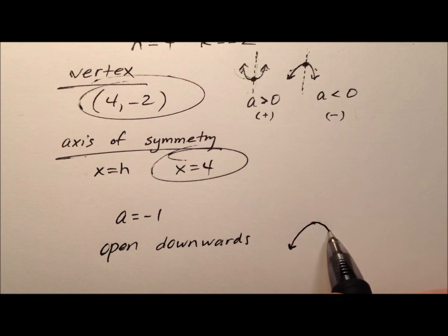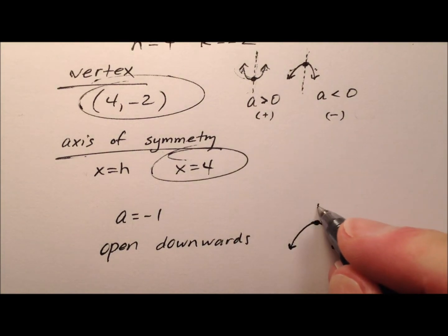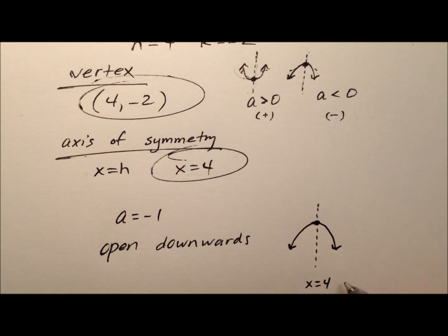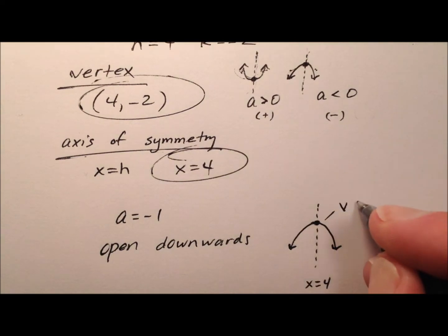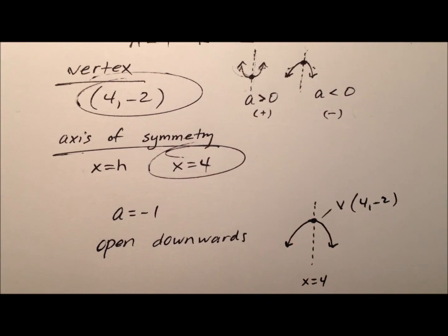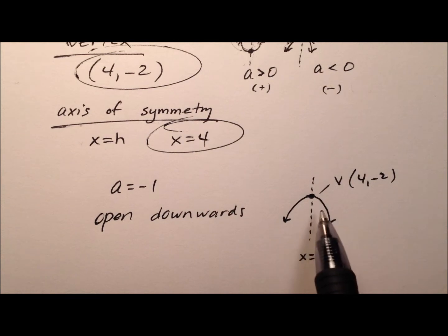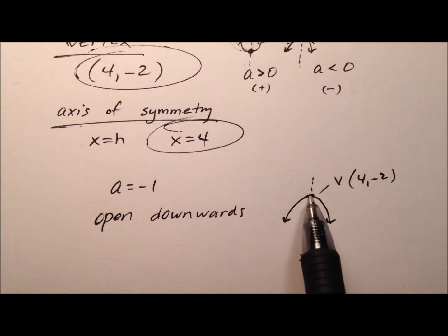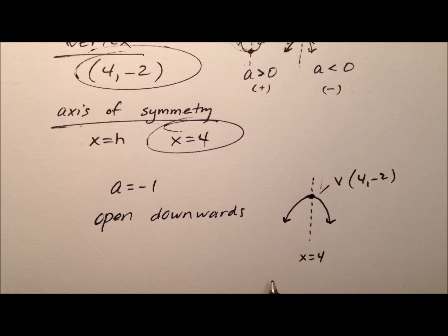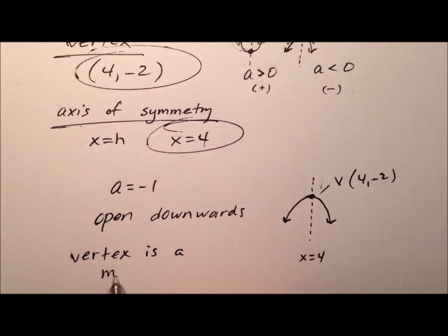So the parabola is opening downward, with the vertex at the ordered pair 4, negative 2, and the axis of symmetry x equals 4. Now let's talk about whether the vertex is a minimum or a maximum of the function. Since the parabola opens downward, the vertex is going to be a maximum — the highest the function ever gets with respect to the y value. So the vertex is a maximum value.